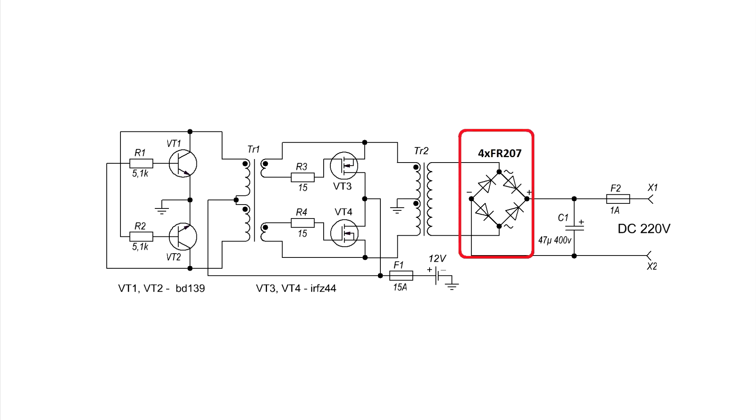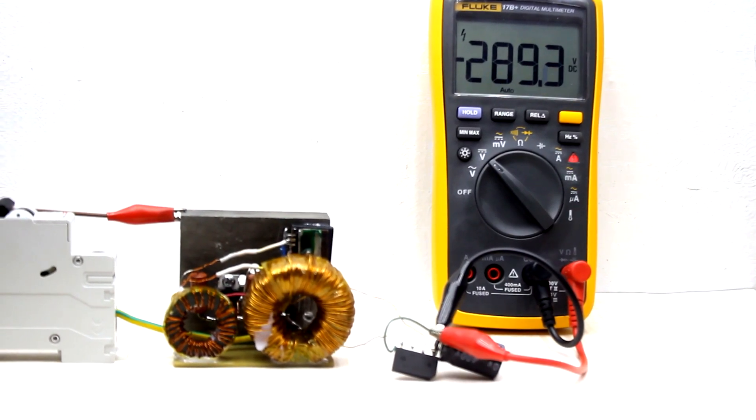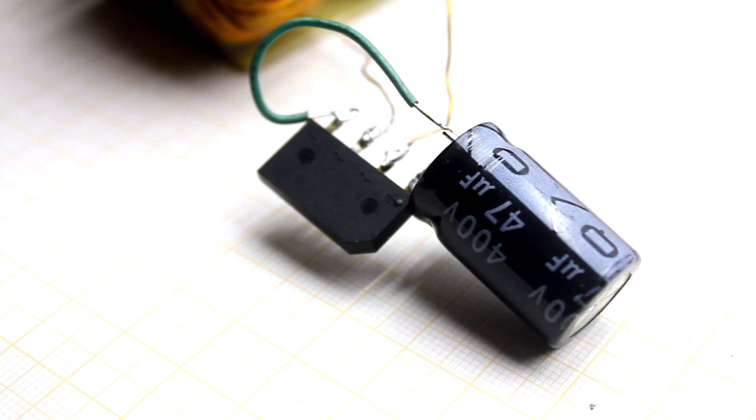It is possible to add a diode bridge to the output of the inverter and a small smoothing capacitor, but in this case the voltage will be greater than 220 volts, as the capacitor will be charged up to the amplitude value.